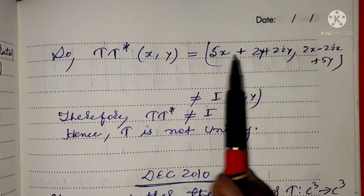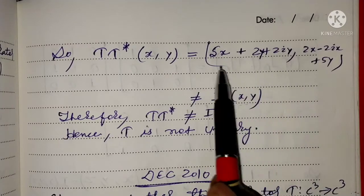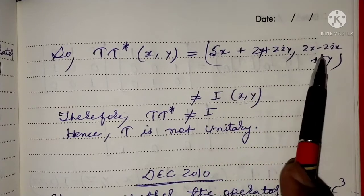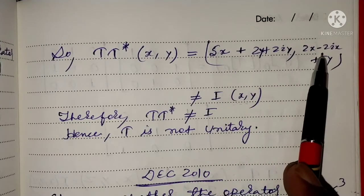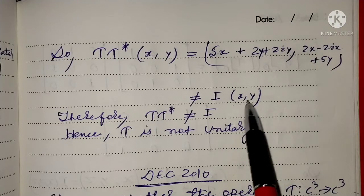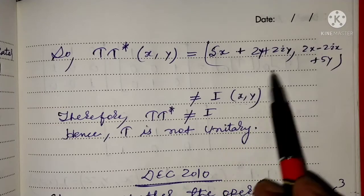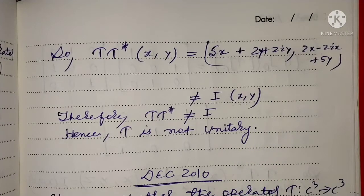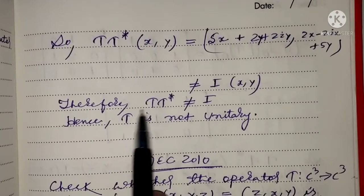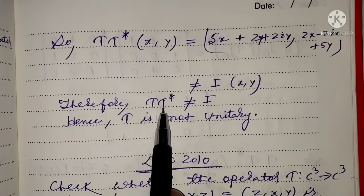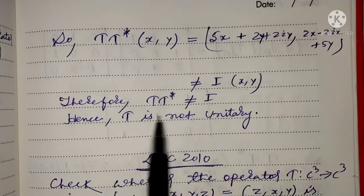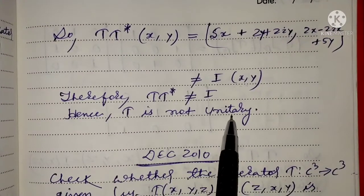For T to be unitary, the result should have been (x, y) — the identity operator applied to (x, y). Since T·t*(x, y) is not equal to (x, y), therefore T·t* is not equal to I, and T is not unitary.